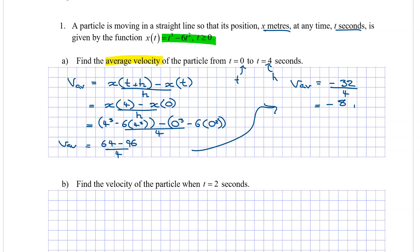And because we're working in meters and seconds, it comes out to be meters per second. So the average velocity in this case is simply minus 8 meters per second.